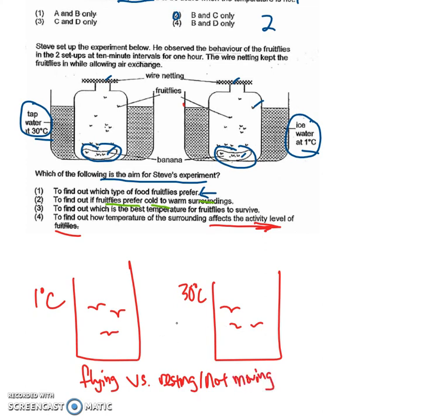If at one degree most of them are lying on the floor, whereas at 30 degrees most of them are flying in the air, then you know that activity level for one degree is lower than 30 degrees Celsius.